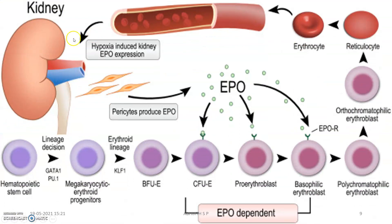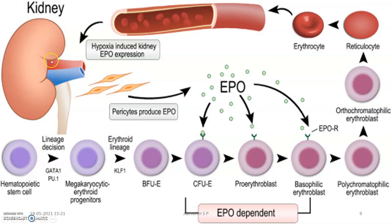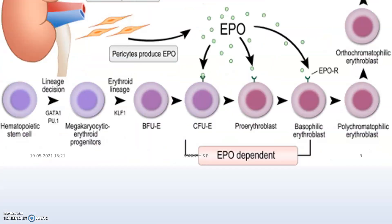As you can see, whenever there is hypoxia, the kidney — specifically the peritubular pericytes and cells — will produce EPO, erythropoietin, which acts like a cytokine hormone. These steps in erythropoiesis are EPO-dependent. If the kidney has got some disease, it will not be producing EPO. When EPO is not acting at this stage, this stage will not proceed, more erythrocytes will not be produced, and that will lead to anemia.